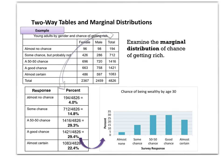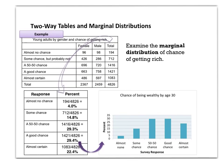Here's an example: taking the data comparing males and females to their feelings about whether they're going to be rich or not. If I want to look at the marginal distribution — the total number of results — there were 194 students who said they had almost no chance, out of a total of 4,126, which comes out to about four percent.